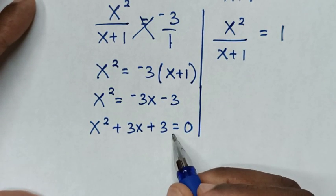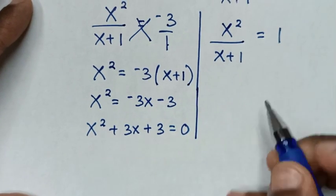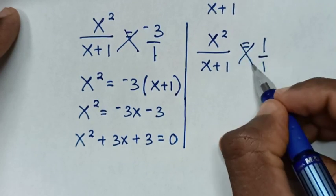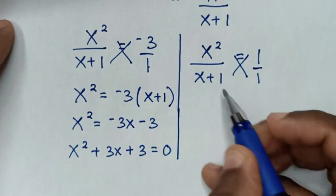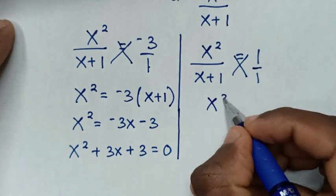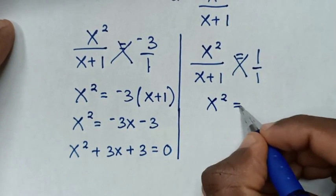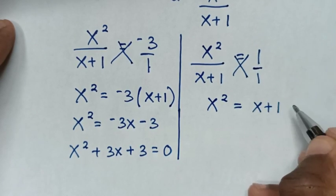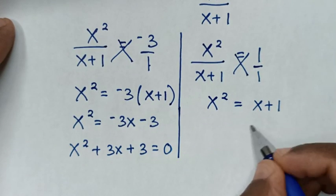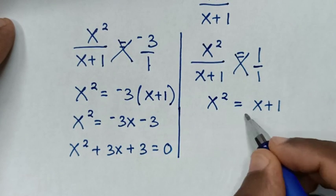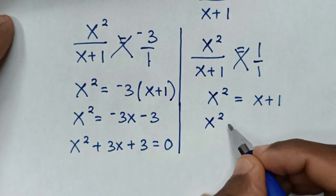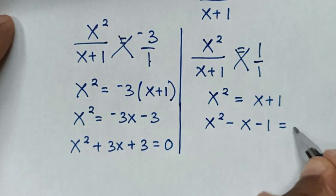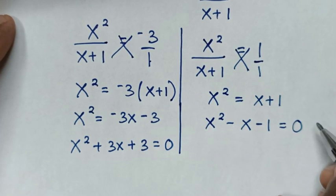For the second solution, u equal to 1 means x squared over (x plus 1) is equal to 1. Cross multiplying: x squared equals x plus 1, then taking everything to one side gives x squared minus x minus 1 is equal to 0.